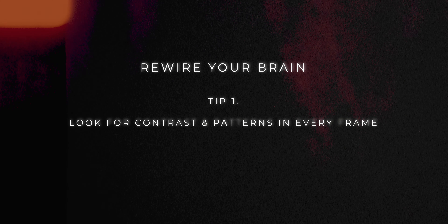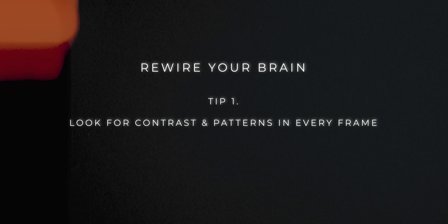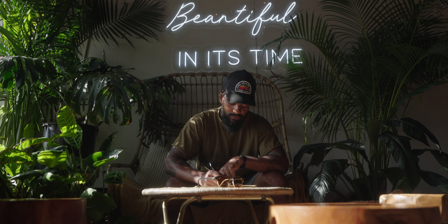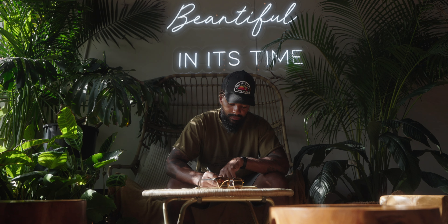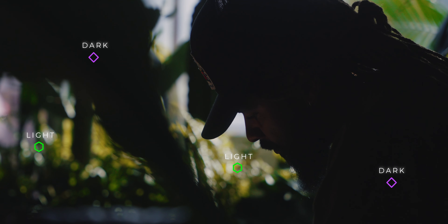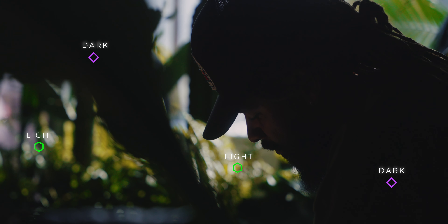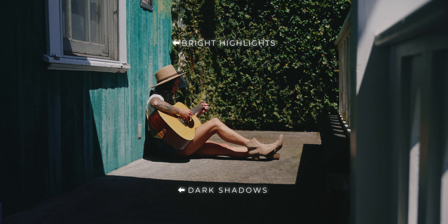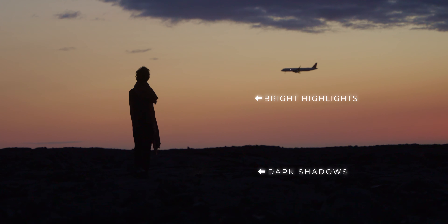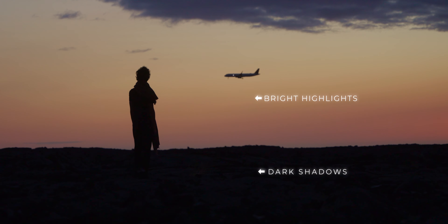The first tip is look for contrast and patterns in every frame. Instead of just shooting your subject normally, look for patterns in your image. Look for scenes where the dark shadows contrast with bright highlights. These contrasts not only add visual interest, but also help to create a sense of drama and mood in your shots.